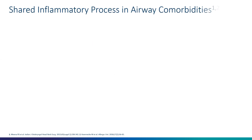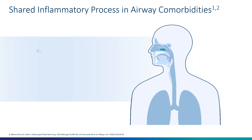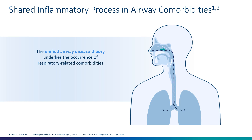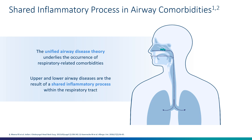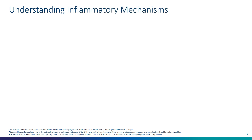Considering shared inflammatory processes and comorbidities, if we think about the unified airway disease theory, it starts from the tip of the nose and goes into the lower airways associated with comorbidities. Upper and lower airways are the result of shared inflammatory processes within the respiratory tract. Understanding the inflammatory mechanisms is important to guide therapy and improve outcomes.